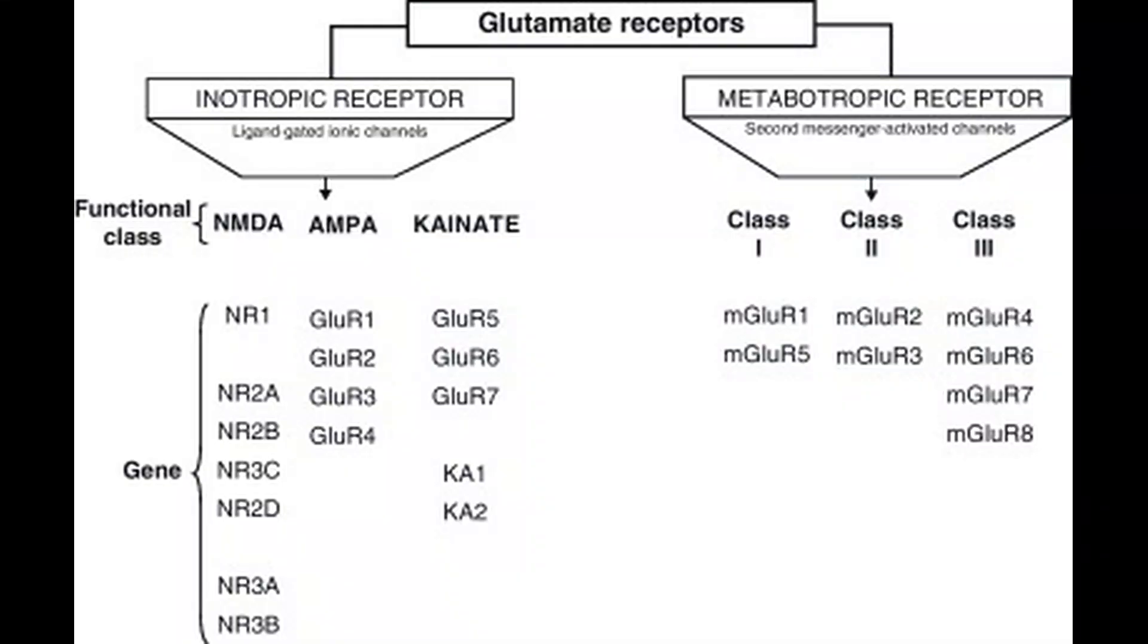Glutamate receptors are divided into ionotropic and metabotropic categories. Ionotropic receptors like NMDA, AMPA, and kainate mediate fast synaptic transmission. Metabotropic receptors modulate neuronal excitability and synaptic plasticity.